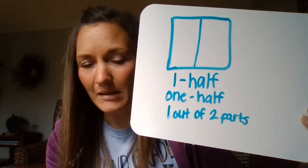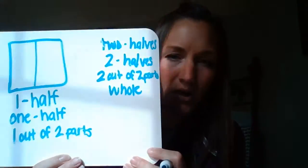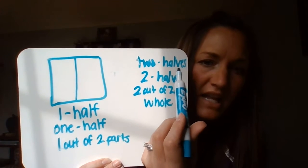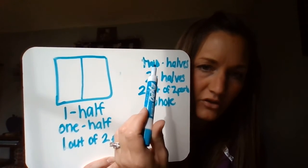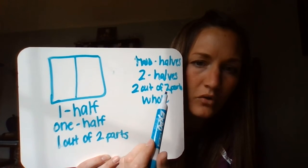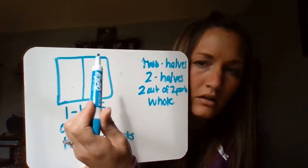Now if I was to name all parts, it would look like this. I could say there are two halves with words, or I could write it with two halves with a number. Or I could say two out of two parts, or we can call that a whole.